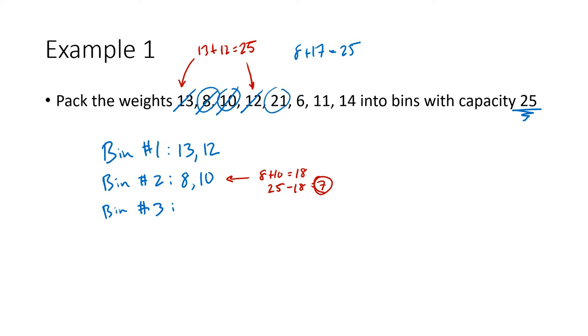If I look at the next number on my list, which is 21, I certainly don't have room to put that 21 into bin number 2, so instead I'll put it into bin number 3. Again, I used it, so I cross it off my list. Next up I've got a 6. Now 6 fits into bin number 2 because bin number 2 has 7 capacity left over, and 6 is less than 7, so I can fit that in. I'm going to add 6 onto my list for bin number 2 and cross that out.